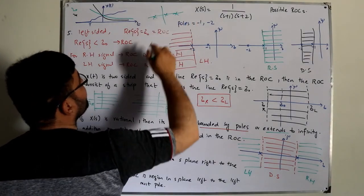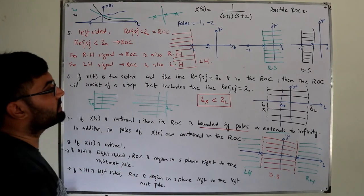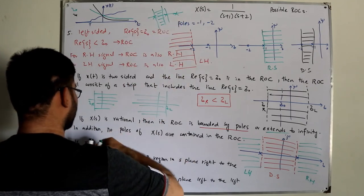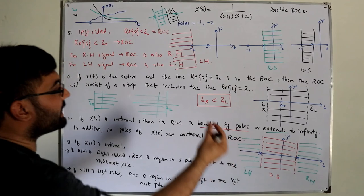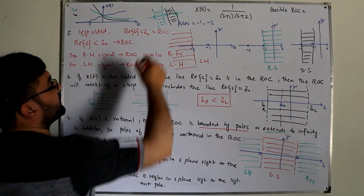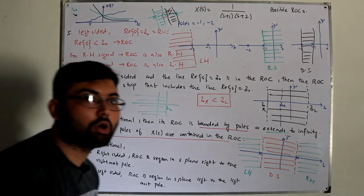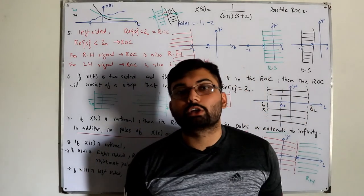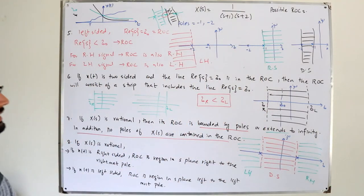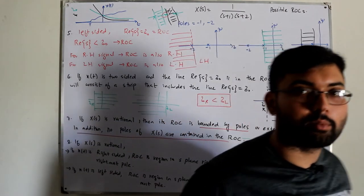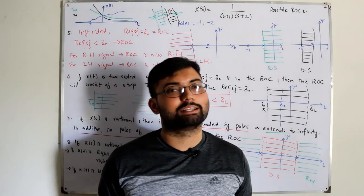For three poles with a double-sided signal, the ROC could lie between either pair of adjacent poles but not between the extreme two, since that would include the middle pole which cannot be in the ROC. That concludes the properties of the ROC — quite an interesting discussion. See you in the next lecture. Take care and do subscribe to the channel. Goodbye.